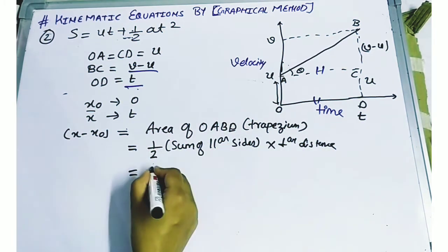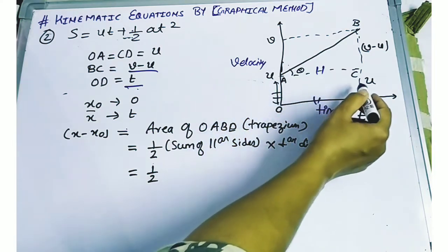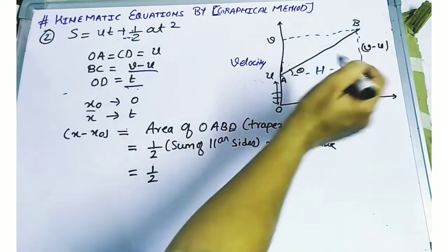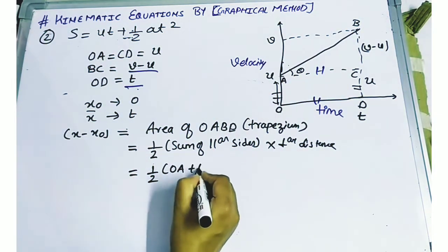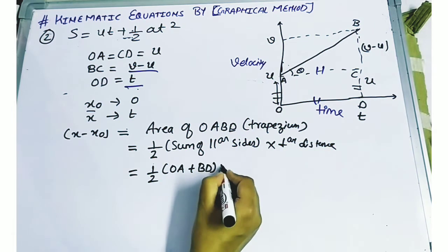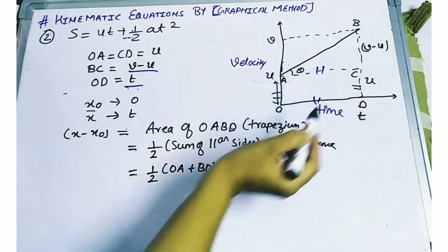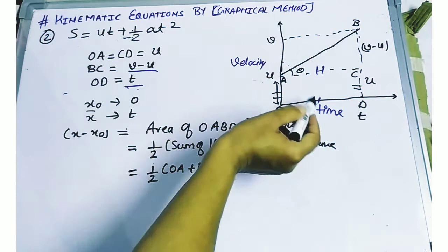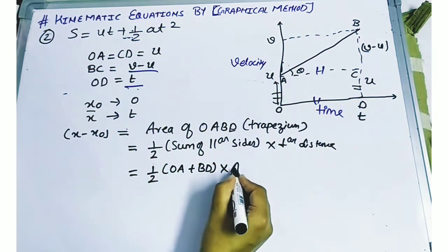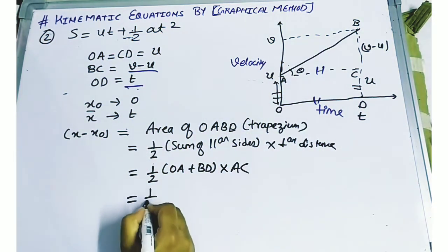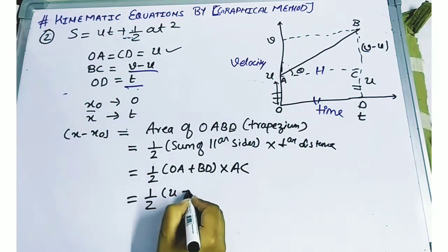The area of a trapezium is half of the sum of the parallel sides into the perpendicular distance between the parallel sides. So here we have: half of (OA plus BD) into AC. What will be the parallel sides? OA and BD. What is the value of OA? That is u.